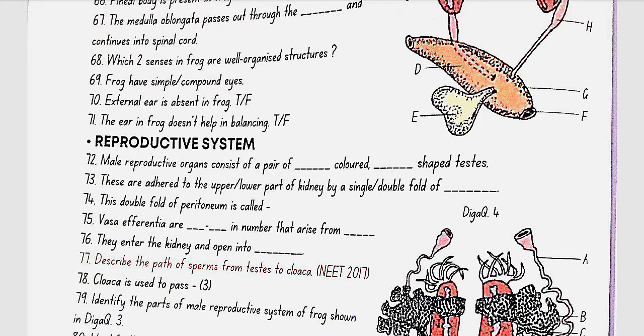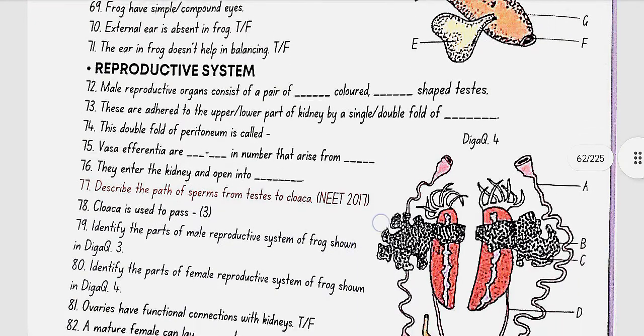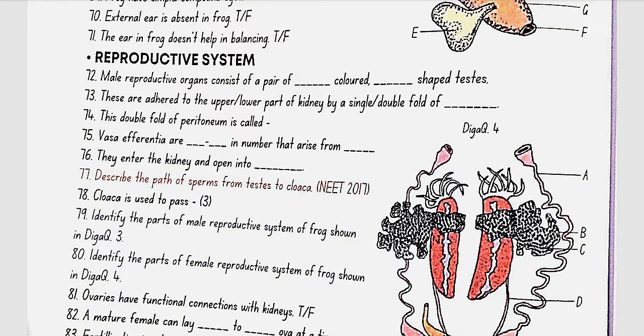Reproductive system. Male reproductive organs consist of a pair of yellowish colored ovoid shaped testes. These are adhered to the upper part of the kidney by a double fold of peritoneum. This double fold of peritoneum is called mesorchium. Vasa efferentia are 10 to 12 in number that arise from testes. They enter the kidney and open into Bidder's canal.